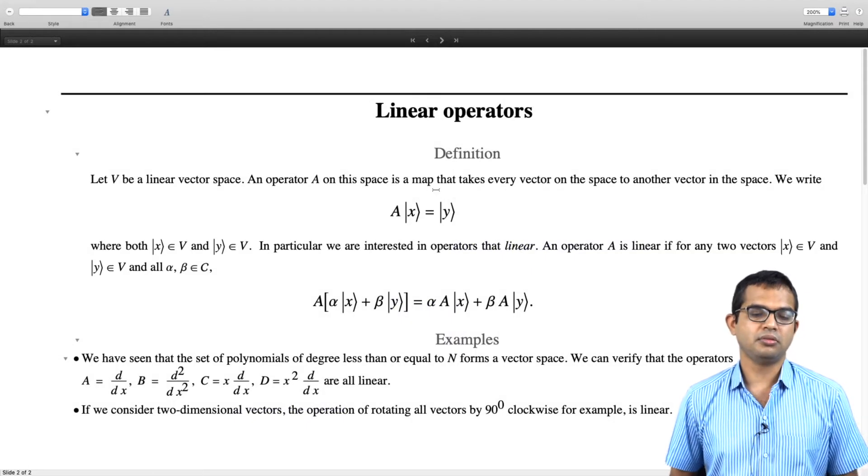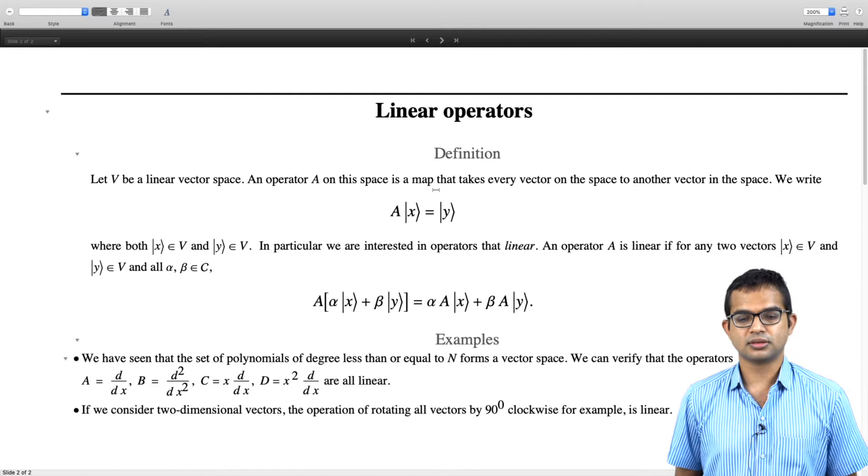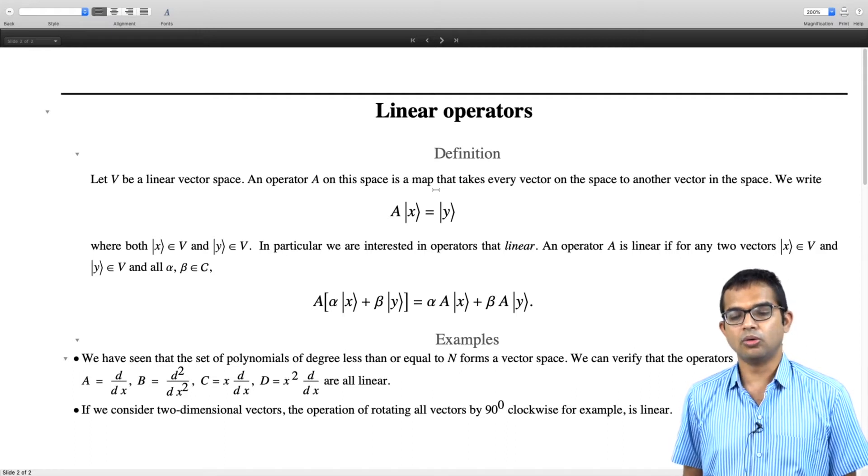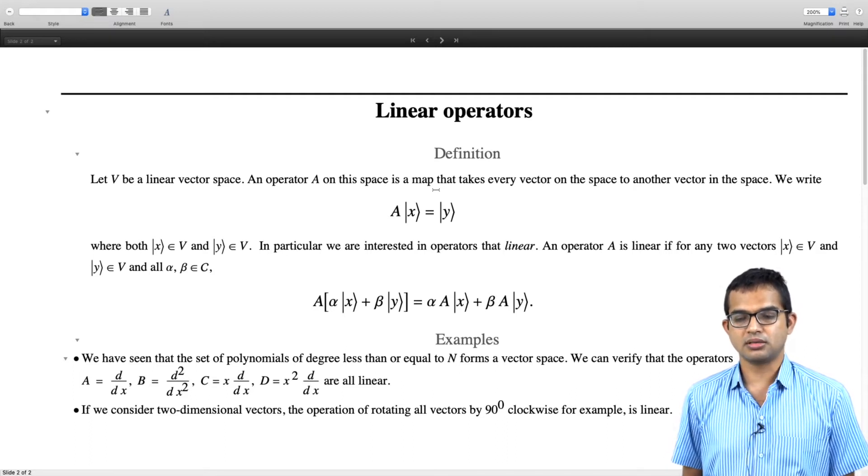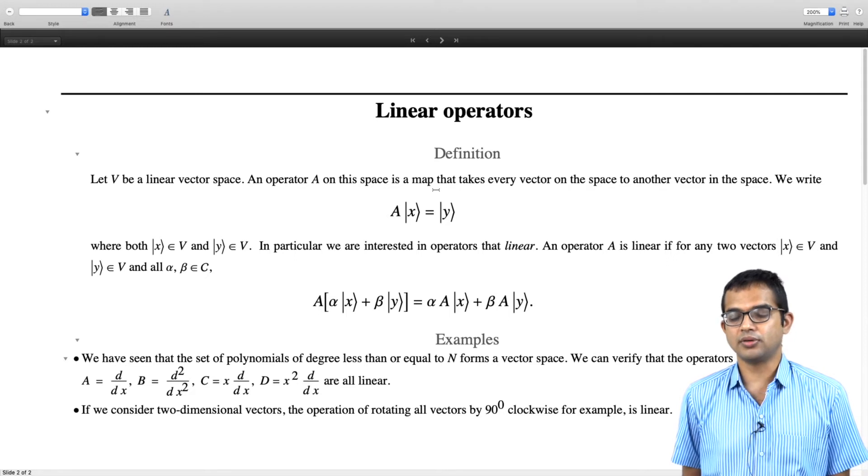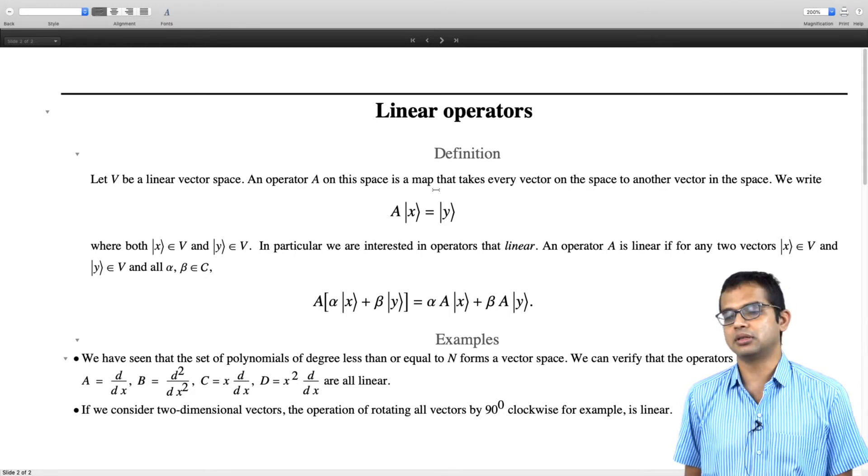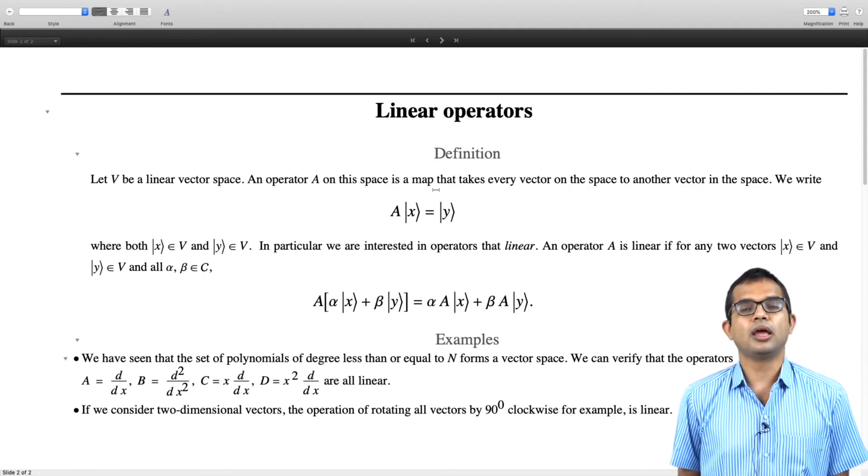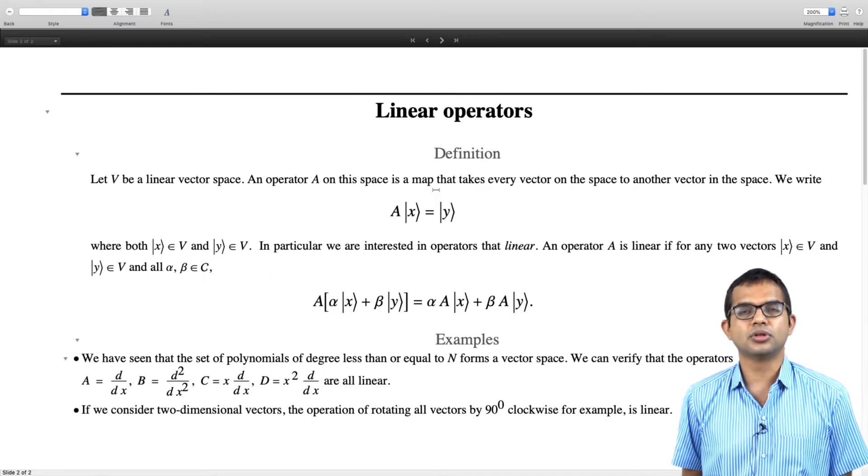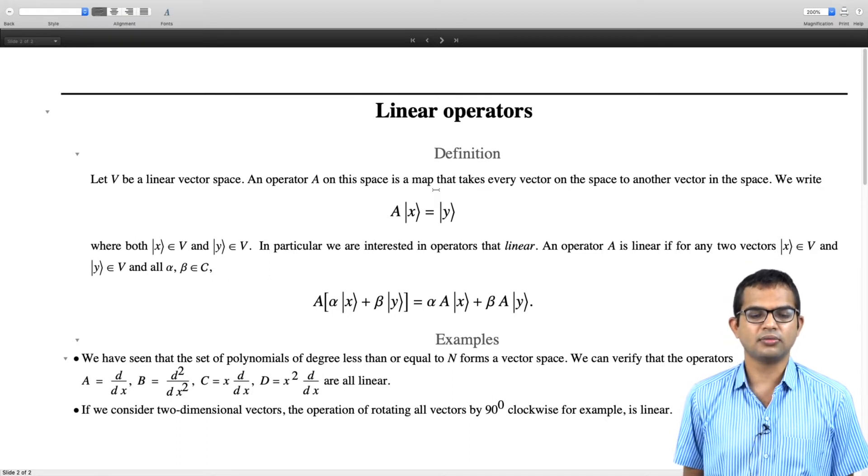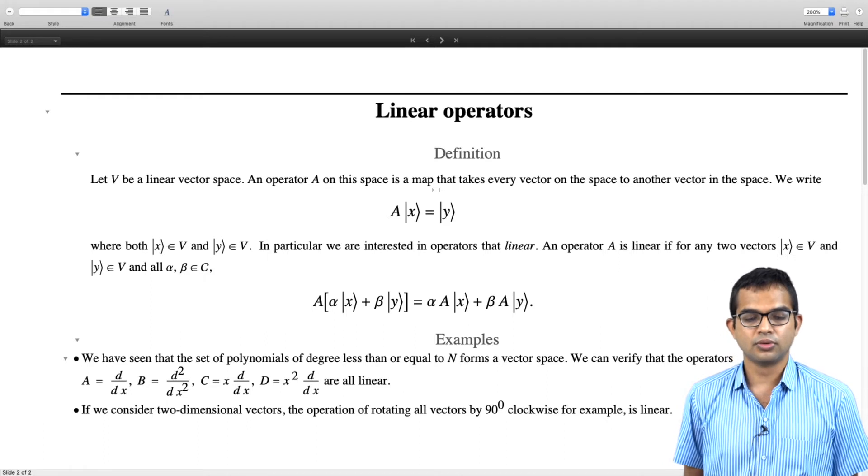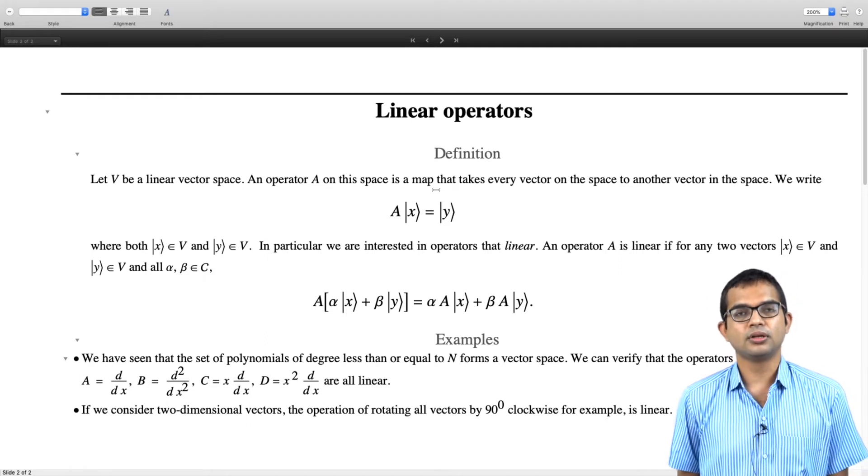You have a linear vector space and an operator O. It is a map basically that takes every vector in the space to another vector in the space. We write A acting on the ket vector x gives you another ket vector y, where both x is an element of V and y is an element of V.